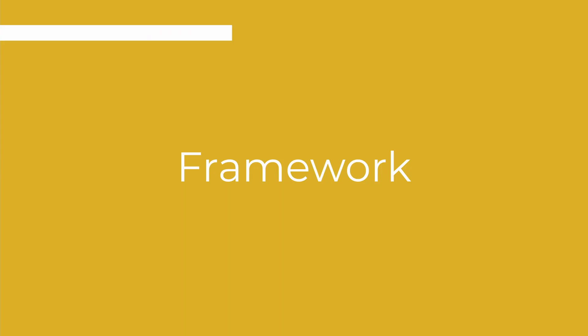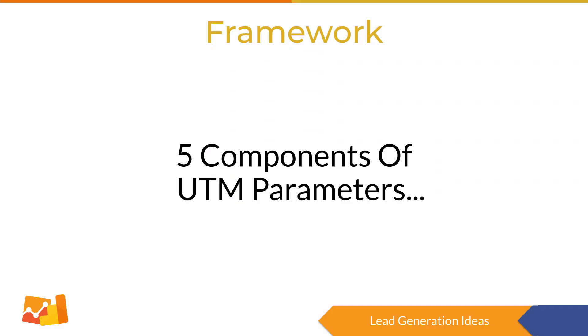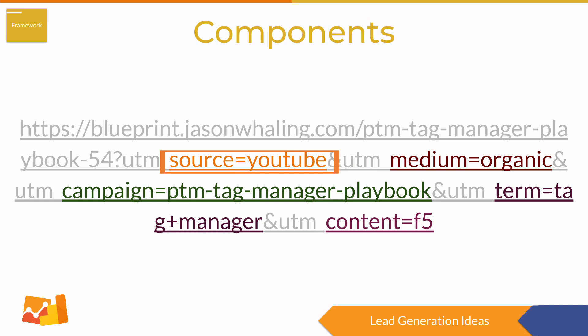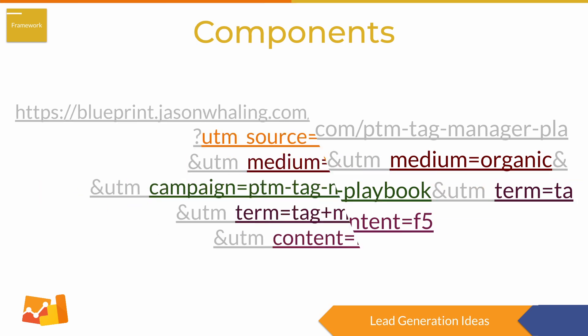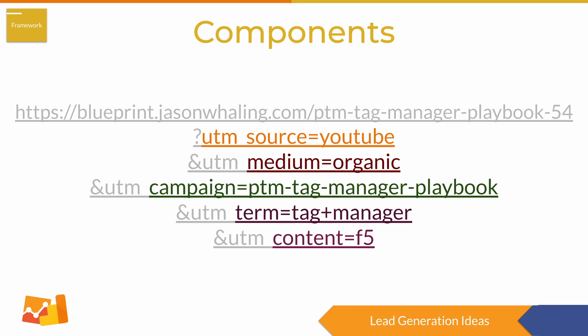A UTM parameter has five components: source, medium, campaign, content, and term. Let's go ahead and break down each element and what they do.